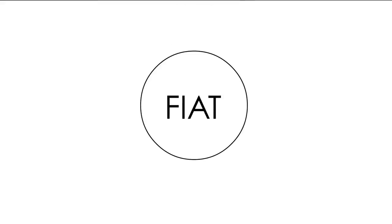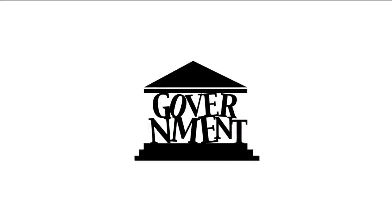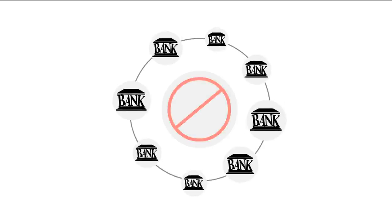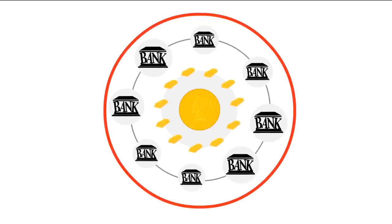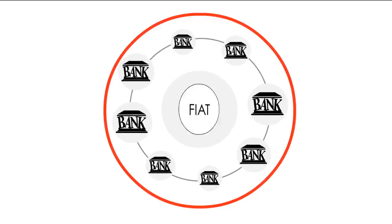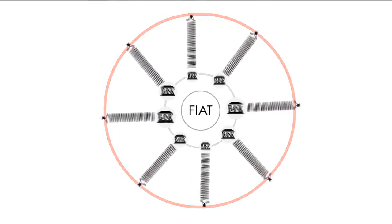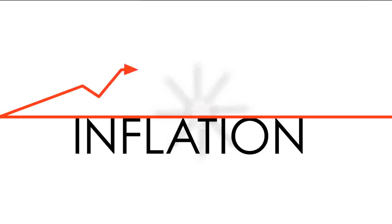Now, the world operates under a system of money and credit known as fiat. It's the law that what we use as money be money. The government and its banking agencies have the power to issue money, but no one else may do so. Unlike gold, of which there is a finite amount in the world, with this fiat system there is no limit to how much money can be created, so inflation becomes inevitable.